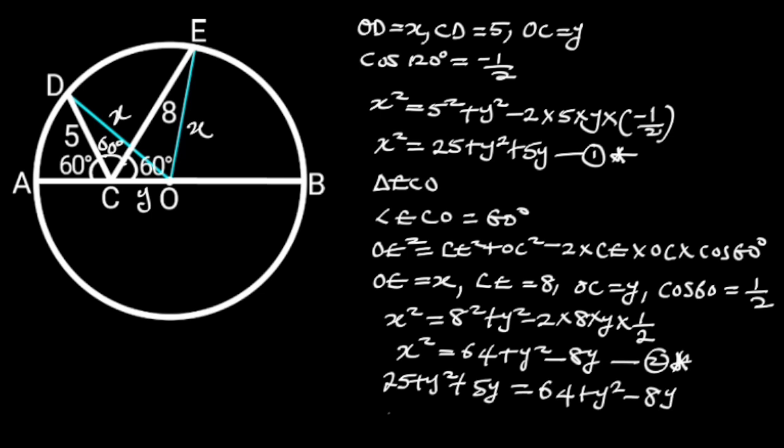Next, let's collect like terms. Doing so will give us 5Y plus 8Y is equal to 64 minus 25 plus Y squared minus Y squared.